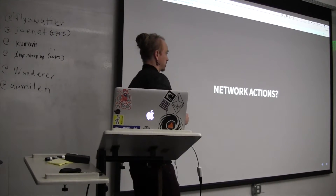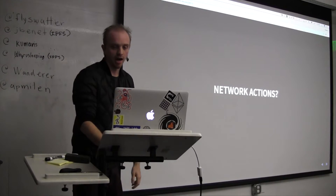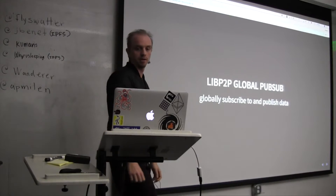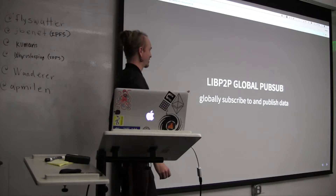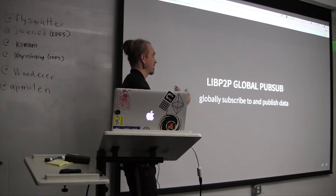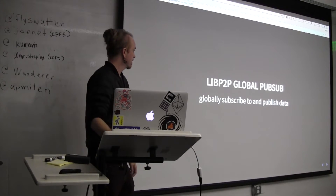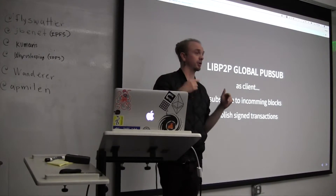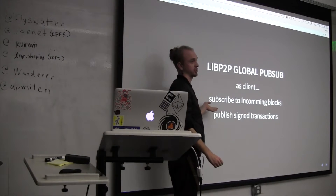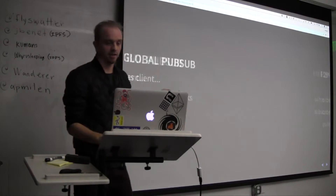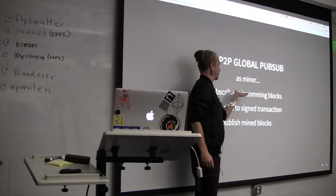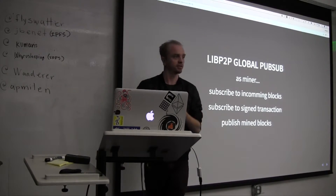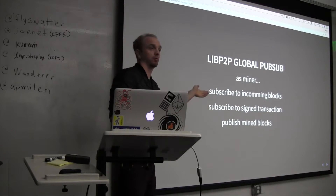That was reading static data about the blockchain, but there's a lot more going on. How do you take actions in the network? LibP2P is part of the networking stack used by IPFS, and they have a feature somewhere between development and production called Global Pub-Sub. It lets you globally subscribe to topics on the network or publish on those topics. As a client, you could subscribe to incoming blocks, and every time the network knows about a new block, you get that block. Then you can sign your transactions and publish on that topic as a new signed transaction. As a validator or miner, you'd want to know about new blocks, but you'd also want to listen for new signed transactions to put inside the block you're mining, and then publish the blocks you've mined on that topic.